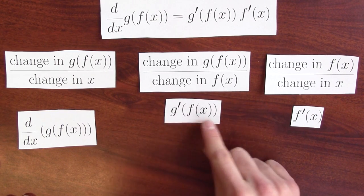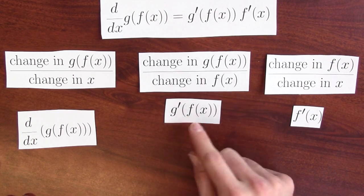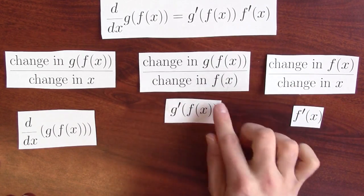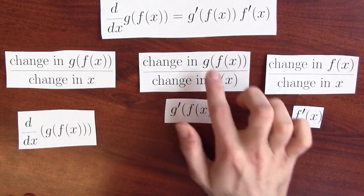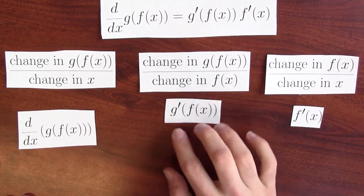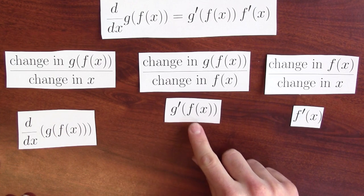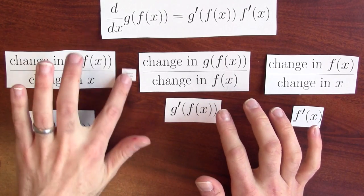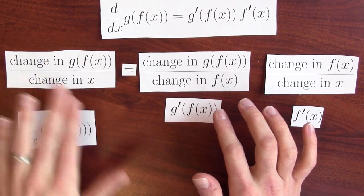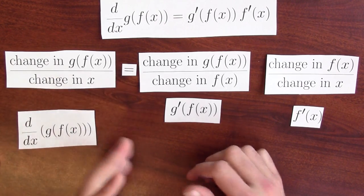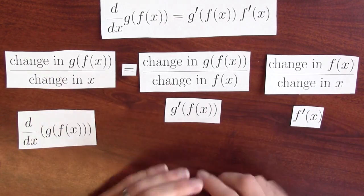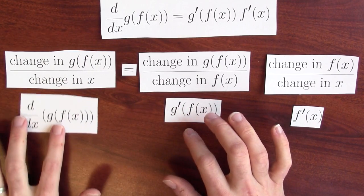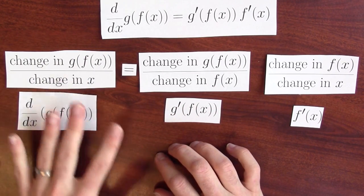This ratio of changes is really the derivative of g at the point f of x. The derivative tells you how wiggling that input would affect the output. I'm asking how will f of x's changing affect g of f of x — that's the derivative of g at the point that's wiggling, f of x. If I multiply these two things together, I get the change in g of f of x divided by the change in x. Multiplying g prime of f of x and f prime of x gives me exactly what I want: the derivative of g of f of x.